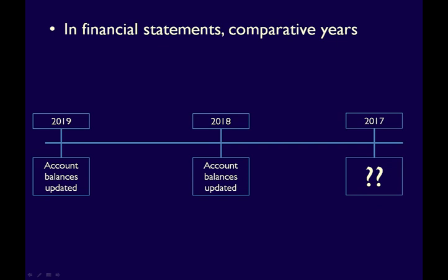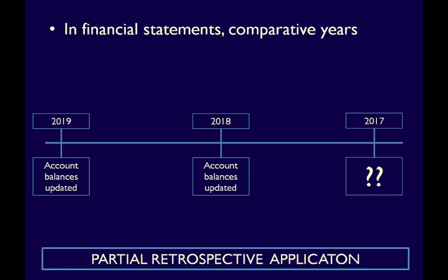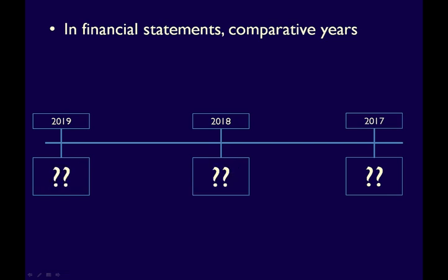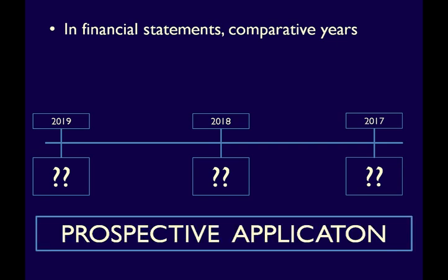What if it's no longer possible to reconstruct data for prior years because the details are unavailable, or the cost of obtaining the data would be very high? In this case, where it's impractical to provide full retrospective application, partial retrospective application is allowed — a summary adjustment to retained earnings in the last comparative year where details can be determined. If it is no longer possible to determine even the impact on the opening balances of the current year, then a change in accounting policy would be applied prospectively, the same way a change in accounting estimate is.